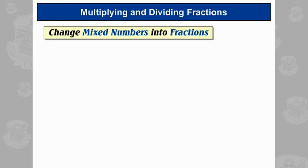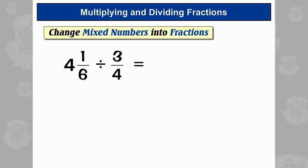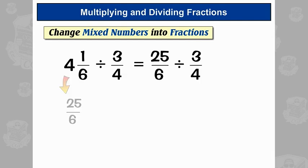The next thing you might come across is mixed numbers. Whenever you get a mixed number, you need to turn it into a fraction. So here, 4 and a sixth is a mixed number. We need to turn that into something over 6. 4 sixths are 24, plus 1 is 25. So that is equal to 25 sixths, and that's what we use instead.